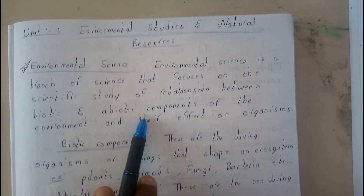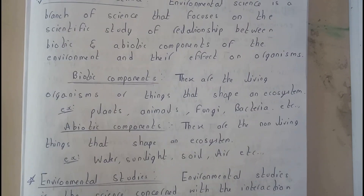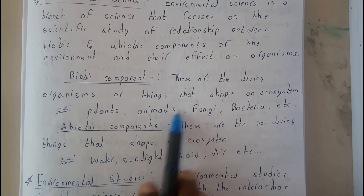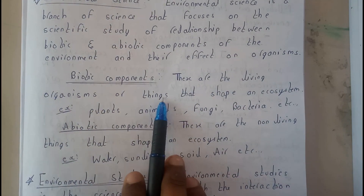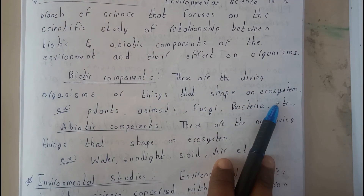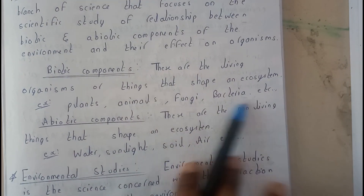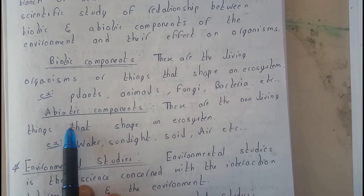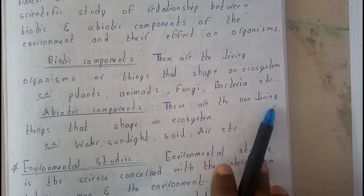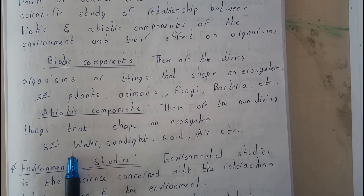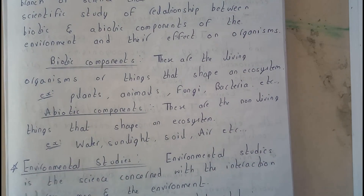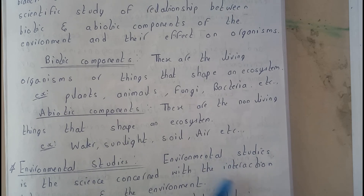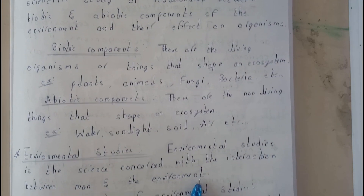In the definition, we mentioned biotic and abiotic - let's go through them. Biotic refers to living organisms - those are the living things that shape an ecosystem. Examples include plants, animals, fungi, and bacteria. Abiotic components are the non-living components that also give shape to the ecosystem. Examples include water, sunlight, soil, and air.